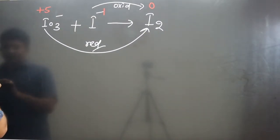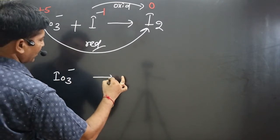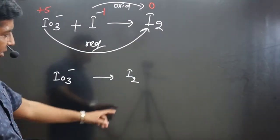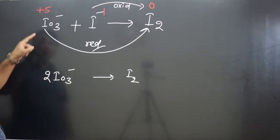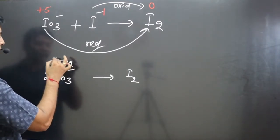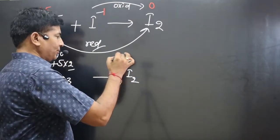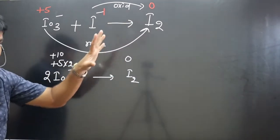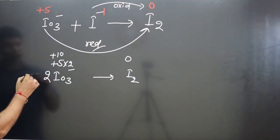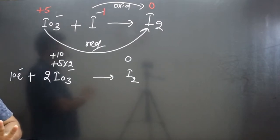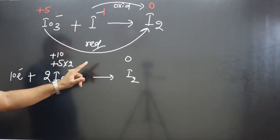For the reduction half-reaction: IO₃⁻ on the left, I₂ on the right. Always balance the number of atoms before balancing charge, so we multiply IO₃⁻ by 2. Two iodines each at +5 gives a total oxidation number of +10; on the right it is 0. The decrease is +10 to 0, which is 10. Since this is a reduction reaction, we add 10 electrons to the left side of the equation to balance the charge.